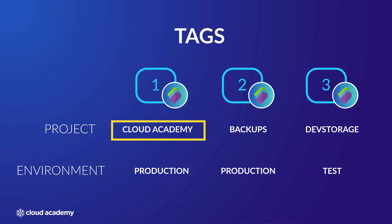Tags like this can be used across all AWS services and help you to manage, categorize, and organize your resources in a variety of ways. Using the Cost Explorer from within your AWS Billing and Cost Management, you can report on these key values. For example, you could identify and highlight the costs associated with resources tagged with the project Cloud Academy, giving you a full understanding of the costs for that particular project.